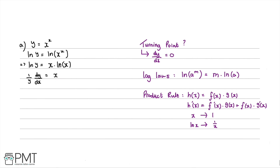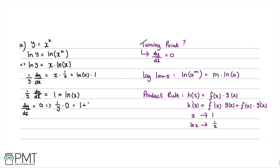Applying the product rule: we get x·(1/x) + ln(x)·1. Tidying this up, the x's cancel to give 1, so we have (1/y)·(dy/dx) = 1 + ln(x). Now we set dy/dx equal to zero, giving (1/y)·0 = 1 + ln(x).